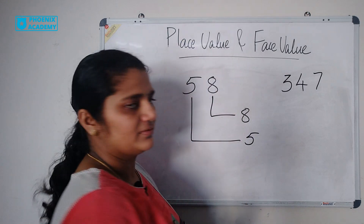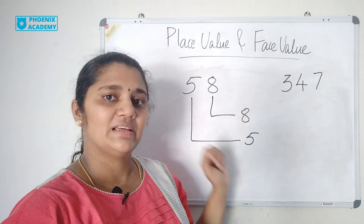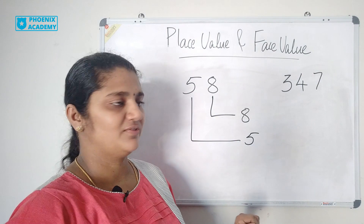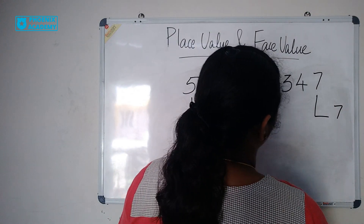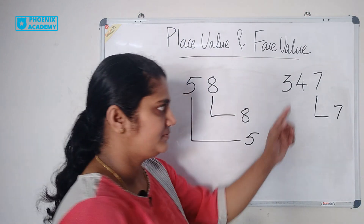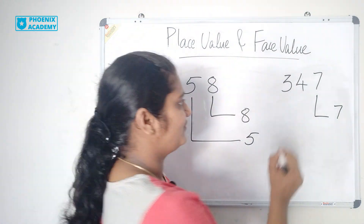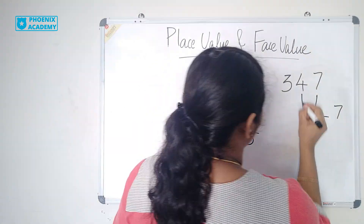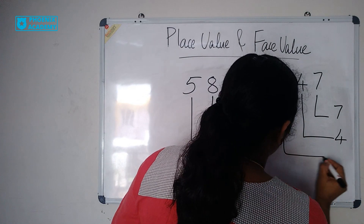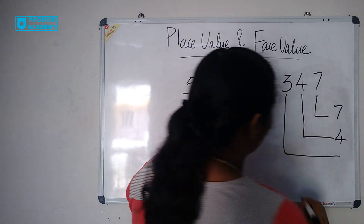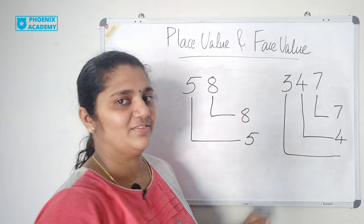347. What is the face value of 7 here? 7 itself. And face value of 4? 4 itself. What is the face value of 3 here? 3 itself.